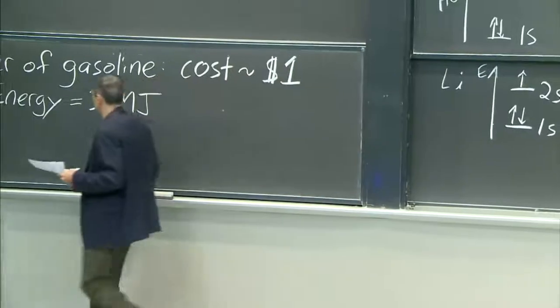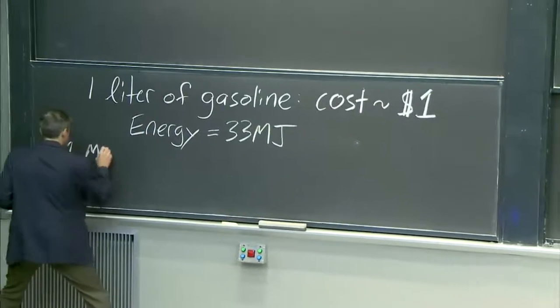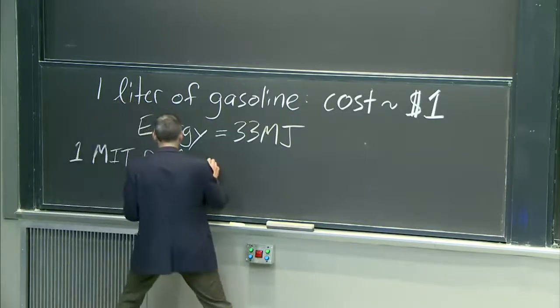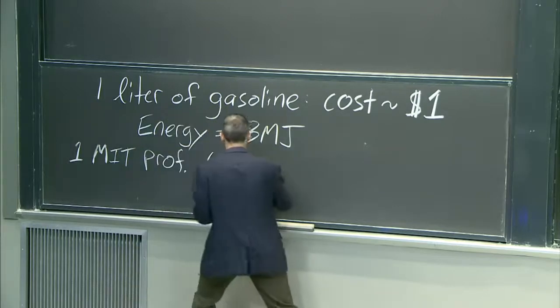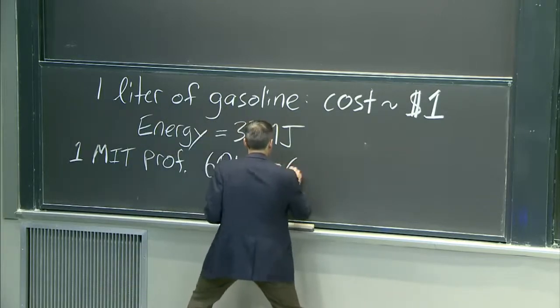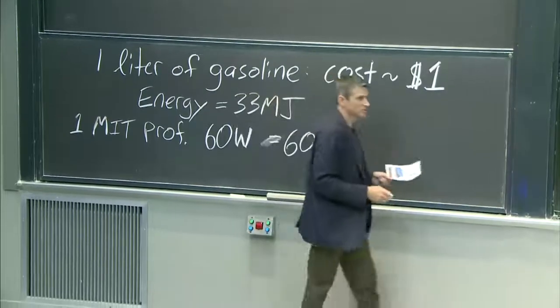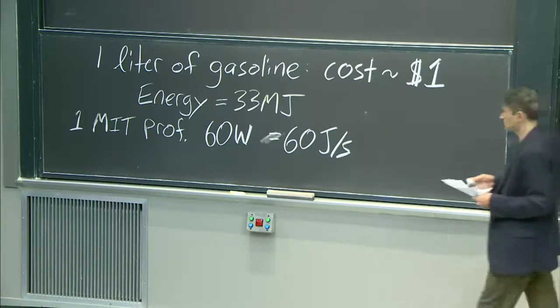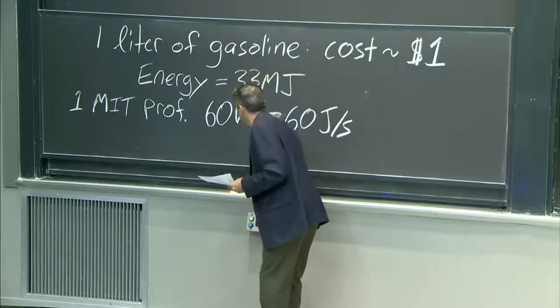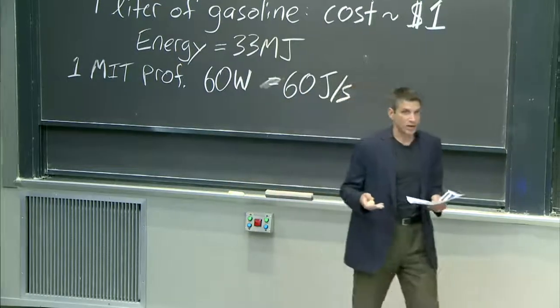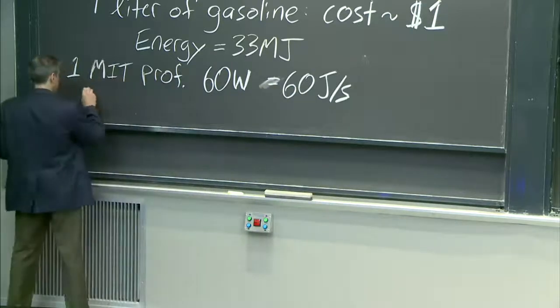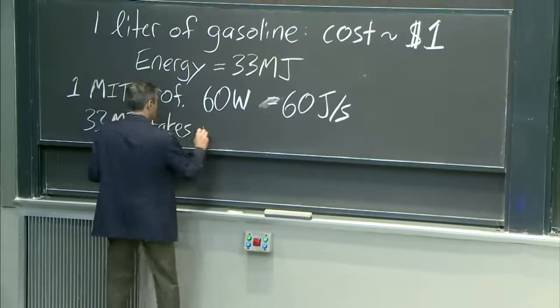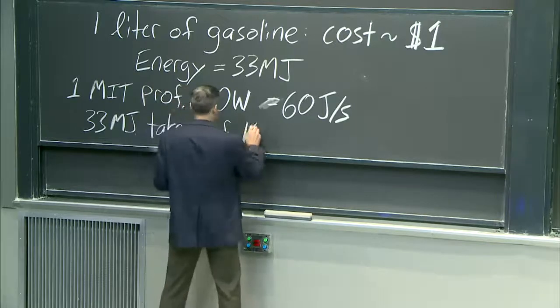OK, good. Now, I'm going to make a comparison. One MIT professor, one MIT professor operates at around 60 watts. Now, this is something like, well, this is equal to 60 joules per second. Now, I know some professors who can operate a little higher than that. Maybe some a little lower. But that's like the average, 60 joules per second. Now, the thing is, if I want to get 33 megajoules out of this professor, then I get, at this rate, 33 megajoules takes the prof 153 hours.